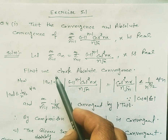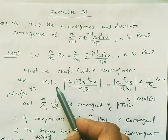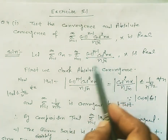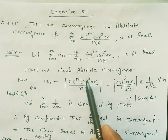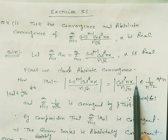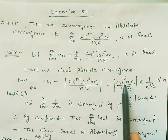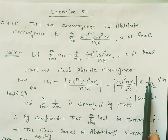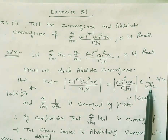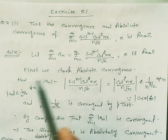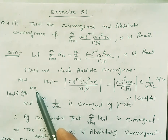For absolute convergence, we take the modulus of a_n. Applying modulus makes (-1)^(n-1) positive. We apply the property that |cos θ| ≤ 1, so the numerator term becomes ≤ 1. Simplifying n * √n gives n^(3/2). So we get |a_n| ≤ 1 / n^(3/2) for all n.